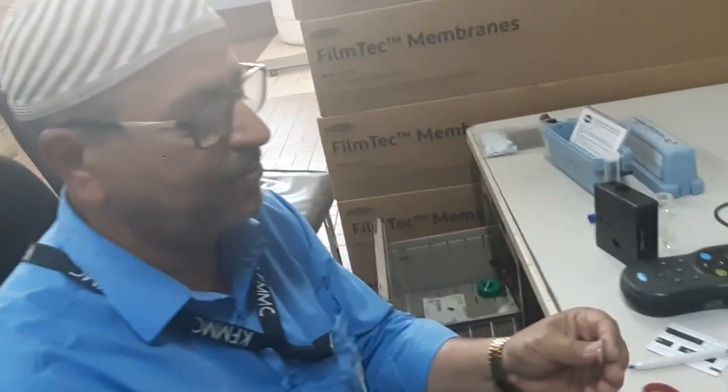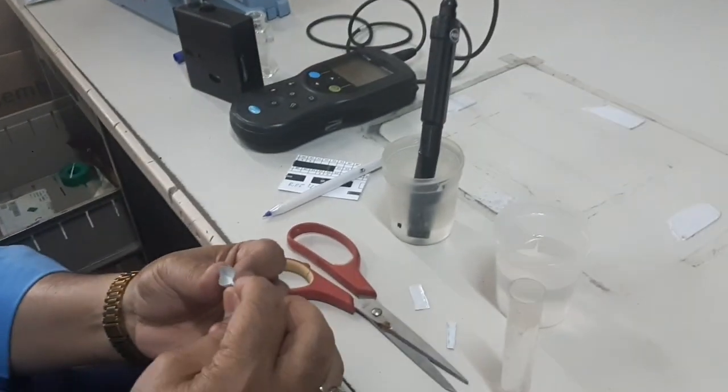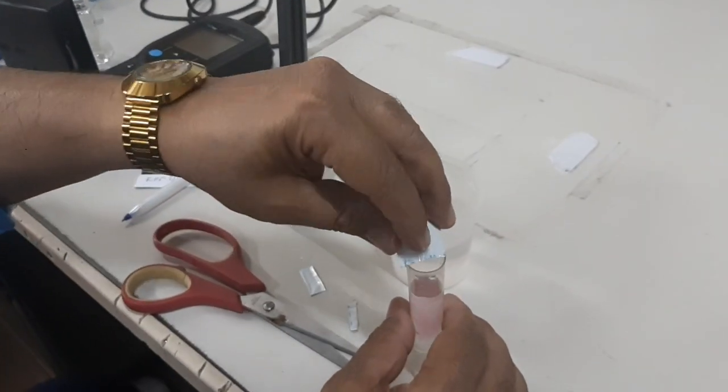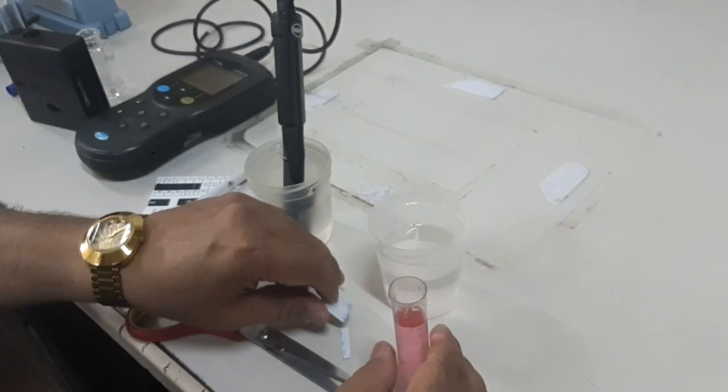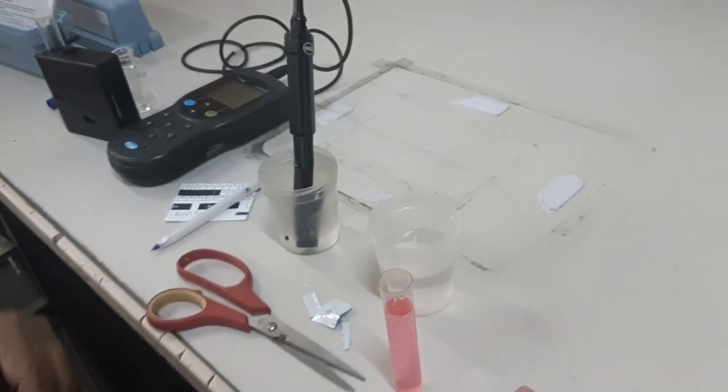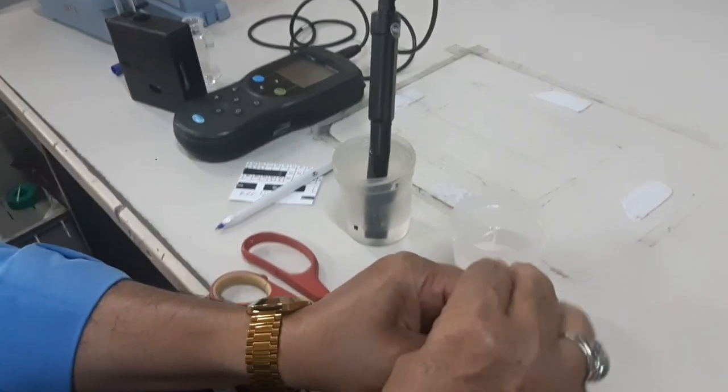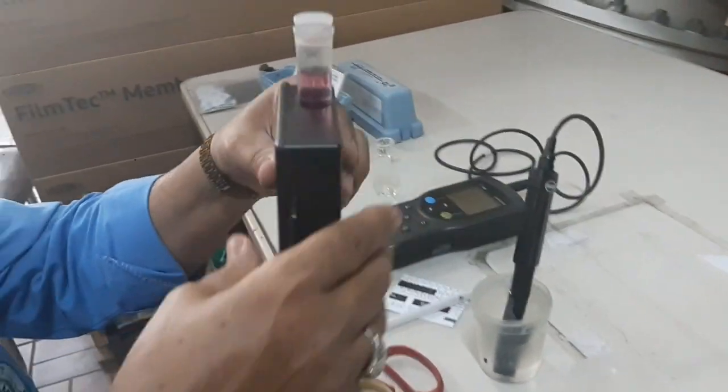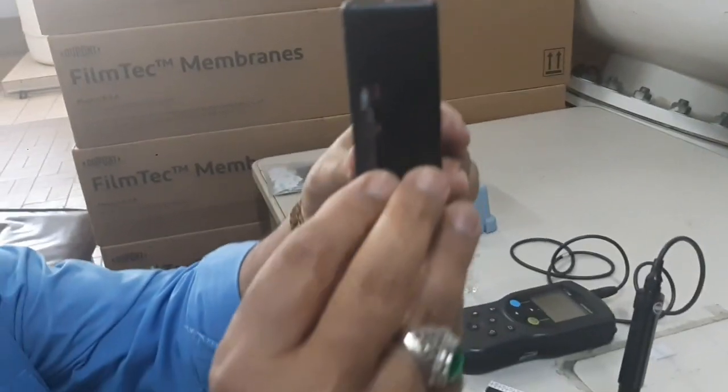Now, ppm, it is a term used in chemistry to denote a very low concentration of a solution. One gram in 1,000 ml is 1,000 ppm, and one thousandth of a gram, 0.001 gram in 1,000 ml is 1 ppm. So, ppm means one part per million. That's the concentration that we use.